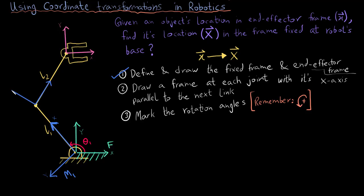Then I make the second frame M2. Notice that the x-axis is parallel to the next link and the angle is between the x-axis of M1 and the x-axis of M2, which is marked as theta 2. And theta 3 is between the x-axis of M2 and the x-axis of M3 in an anti-clockwise direction.